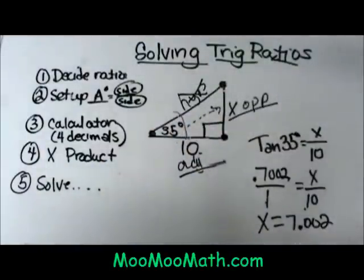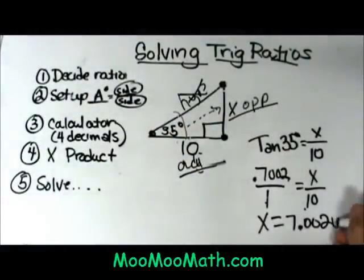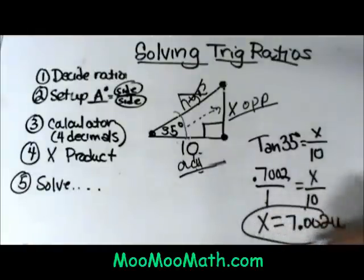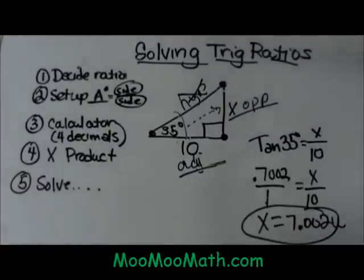So it's 7.002 inches, feet, meters. We're not sure what kind of units so I'll just put units and that is a linear measurement. So that's how you would set up and solve the trig ratios. I hope this video was helpful.